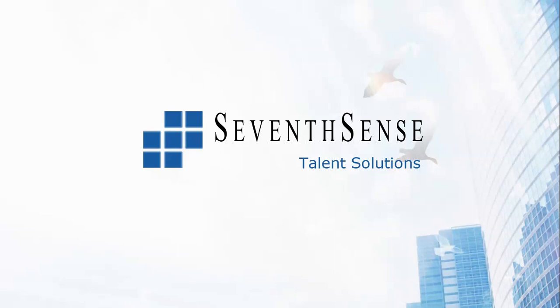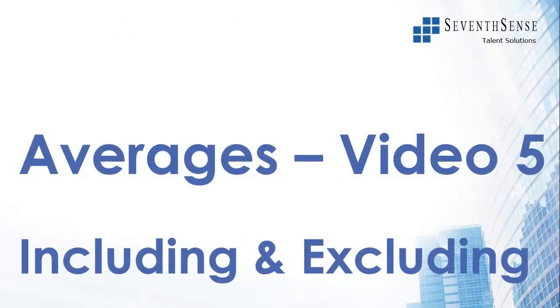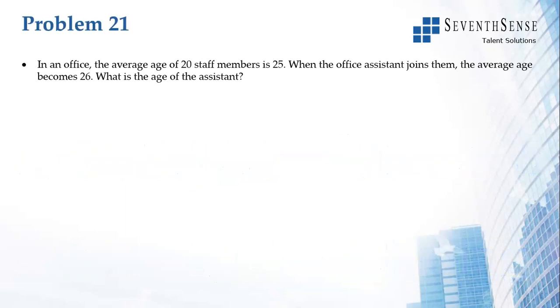In this video we're going to look at something known as including and excluding concept. What this means is there's a certain set of people, a person gets added, and when that person gets added the average changes, or a person from that group goes away and consequently the average changes. The average can either increase or decrease. We'll see a few problems on this particular concept.